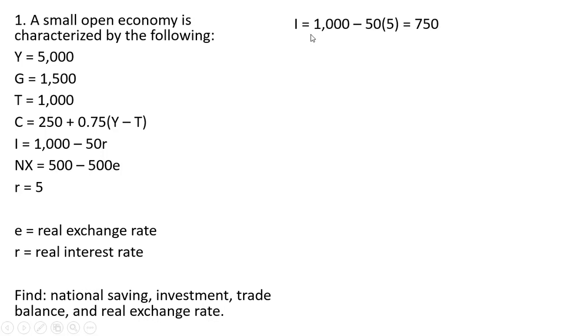So we'll start with the investment function. First thing we're going to do is plug this 5% into this investment function here. And we have investment spending of $750, 1,000 minus 250. The next step is to evaluate the consumption function at 5,000 for Y and then subtract out taxes of 1,000. And we have consumption here of $3,250.